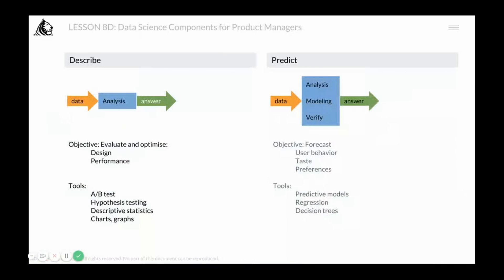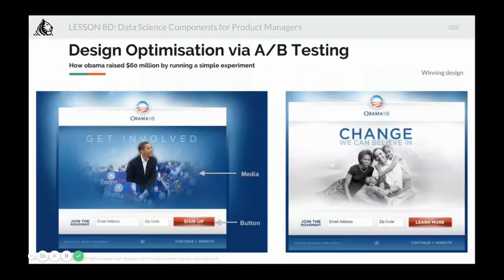I'll recommend that you Google this out and read a little bit more about this to give you an idea of the power of A-B testing. Design optimization via A-B testing, back in Obama days, Obama 08 was a massive success. He ended up raising about $60 million by running a simple experiment which has been very nicely articulated in a link which is given in the speaker notes.